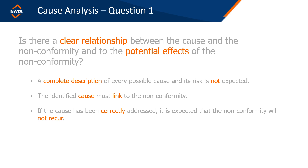The first question is: is there a clear relationship between the cause of the nonconformity and the potential effects? You really have to link the two things, so you need a description of what's been happening. The cause analysis is ultimately for you to improve your processes — we're just observing and making a finding as to whether or not you've addressed the matter. The identified cause must link to the nonconformity.